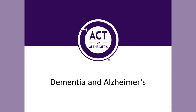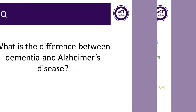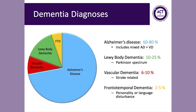Before we start, let's cover the basics — dementia and Alzheimer's disease. What is the difference between dementia and Alzheimer's disease? This is the number one question asked by participants in education sessions. Dementia is an overarching term that describes a set of symptoms like memory loss, forgetfulness, and confusion, but it does not tell you the origin of those symptoms or what disease is causing them. Alzheimer's disease is the leading cause of dementia, accounting for 60 to 80 percent of cases. There are other diseases that cause dementia: Lewy body disease, which is on the Parkinson's spectrum; vascular dementia, which is stroke-related; and frontotemporal dementia, which affects either personality or language depending on the variant.